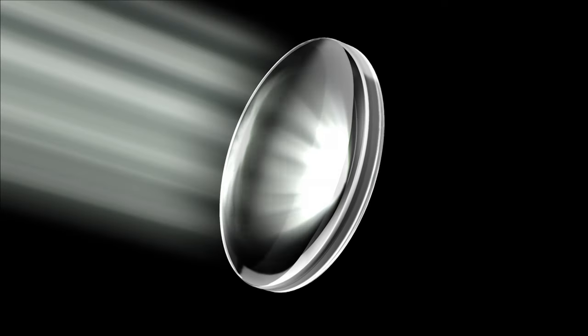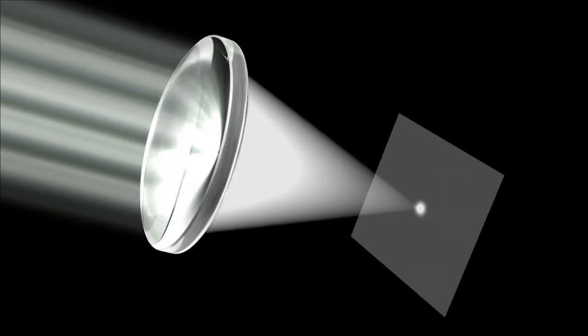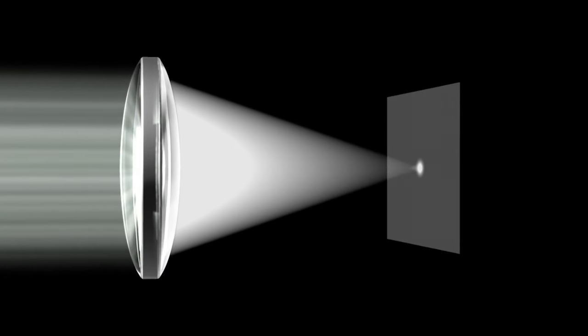This process alone, however, is not enough to produce a sharp image. This is because, strictly speaking, a spherical convex lens alone cannot cause light to converge to a single point.